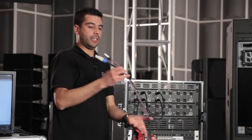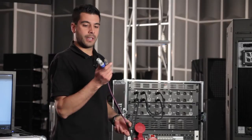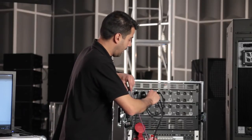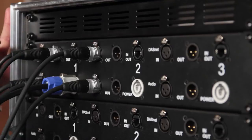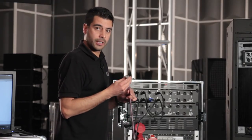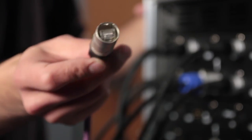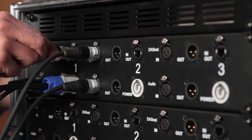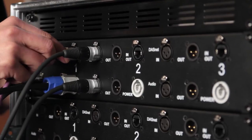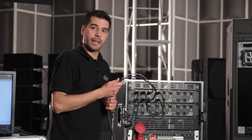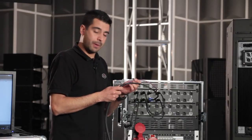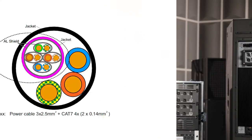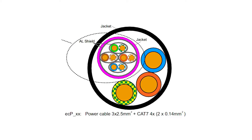To connect to the unit, we use this cable. It has a Powercon, which carries power, and an Ethercon, which carries both data and audio signals. It's very important that we use this cable, recommended by DAS Audio, because it incorporates a triple shield that prevents interference between the data signal and the audio signal.